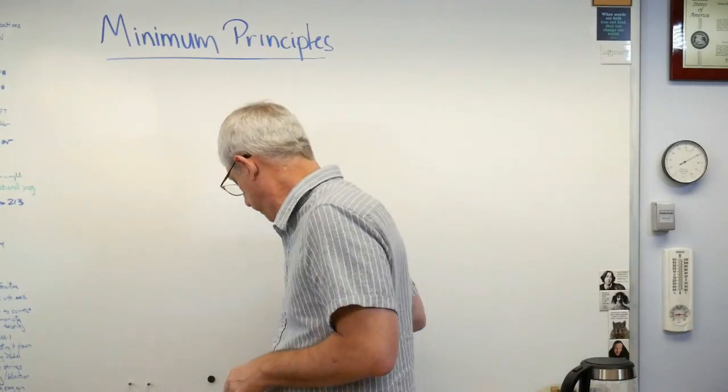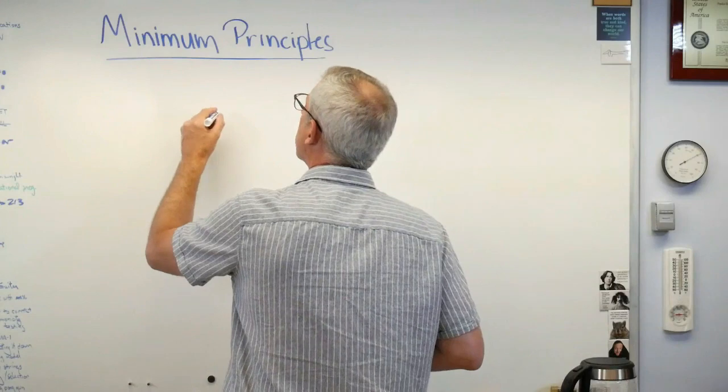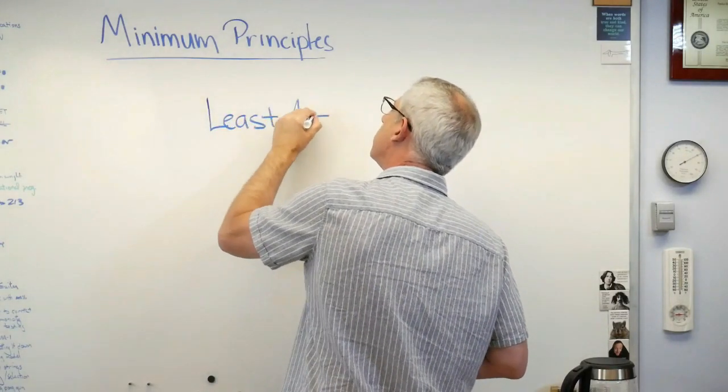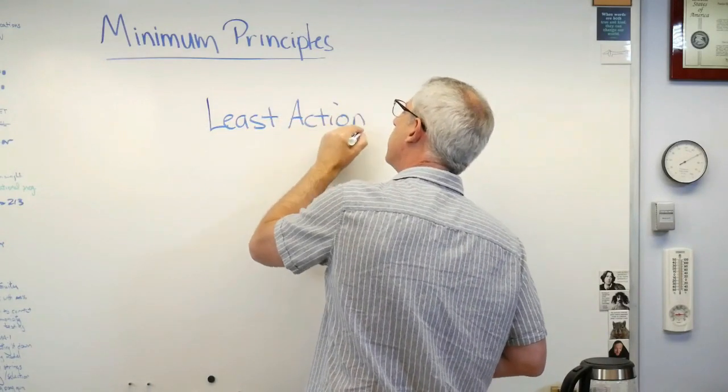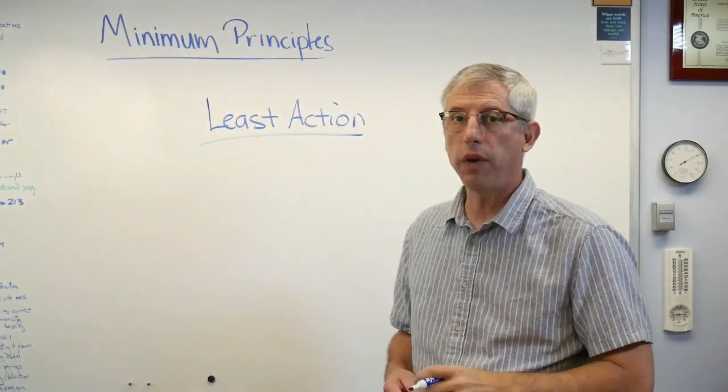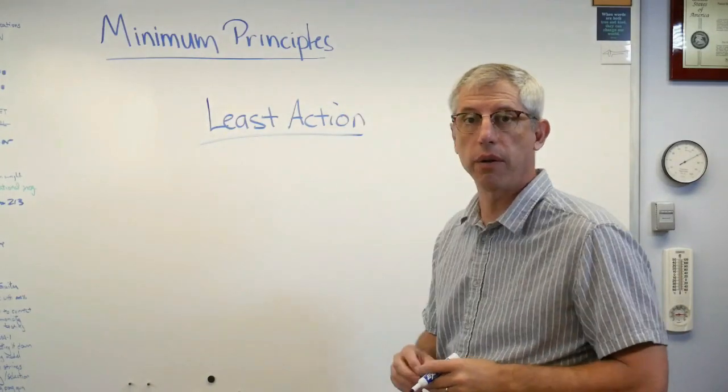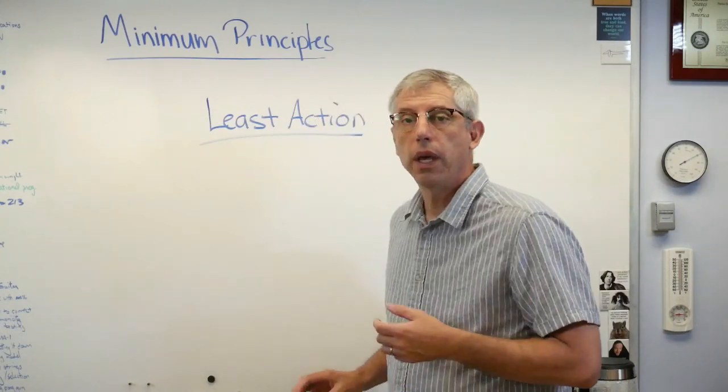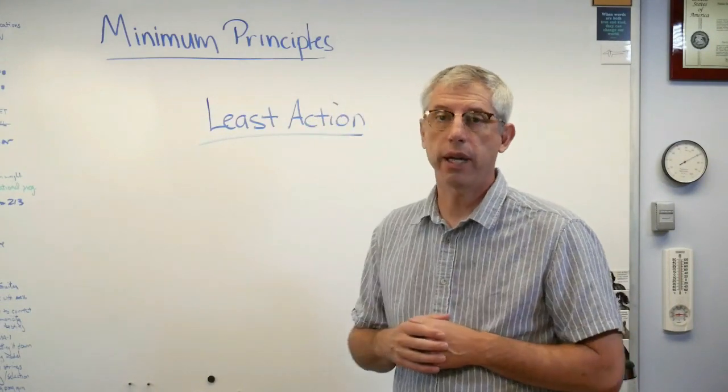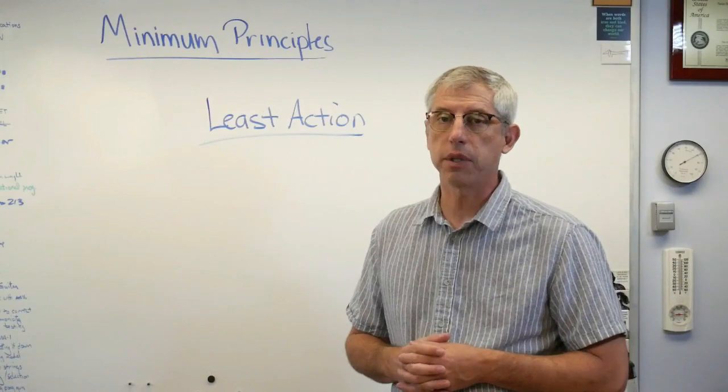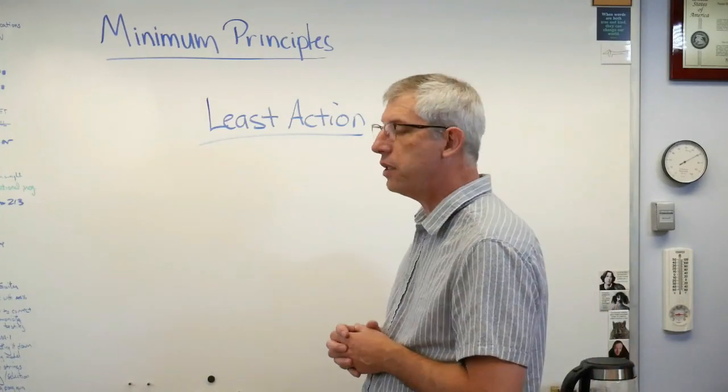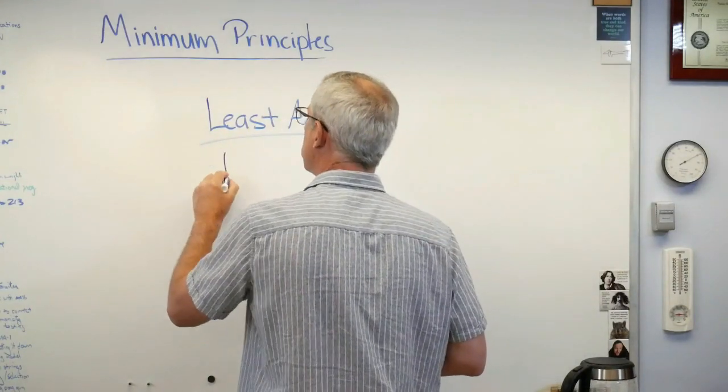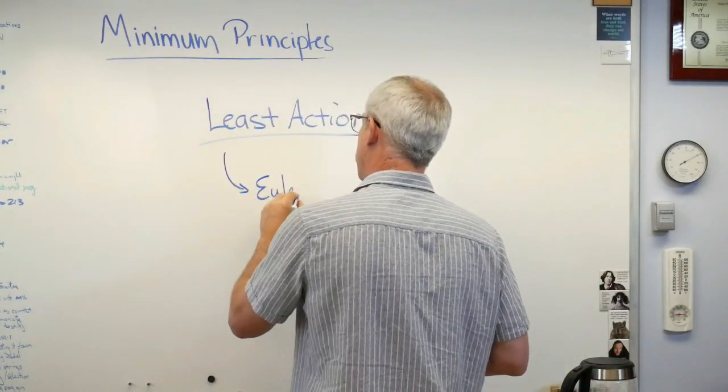What we're looking at is something called the principle of least action. There's a whole field of dynamics built around this, and again it uses the calculus of variations. So the principle of least action gets used all over in physics and engineering. It's absolutely everywhere. Anytime you see something called the Euler-Lagrange equations, you're looking at a manifestation of least action.